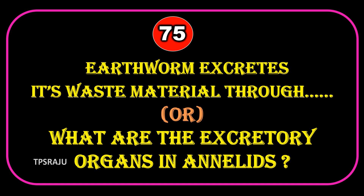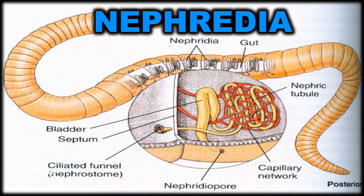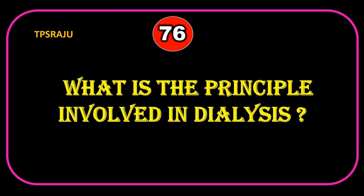Earthworm excretes its waste material through, or what are the excretory organs in annelids? Nephridia. What is the principle involved in dialysis? Diffusion.